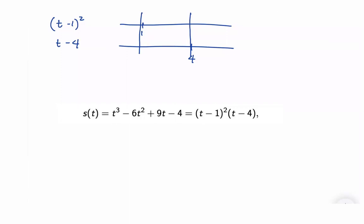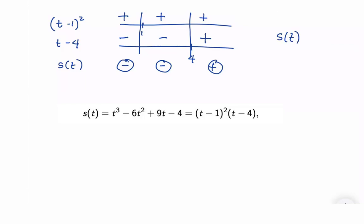I will divide my real number line. For T minus 1 squared, it will always be positive everywhere. For T minus 4, it will be positive when you are to the right of 4 and negative when you are to the left of 4. Therefore, S of T will be negative here and here, and positive here. We want S of T to be positive, so it occurs when T is greater than 4.